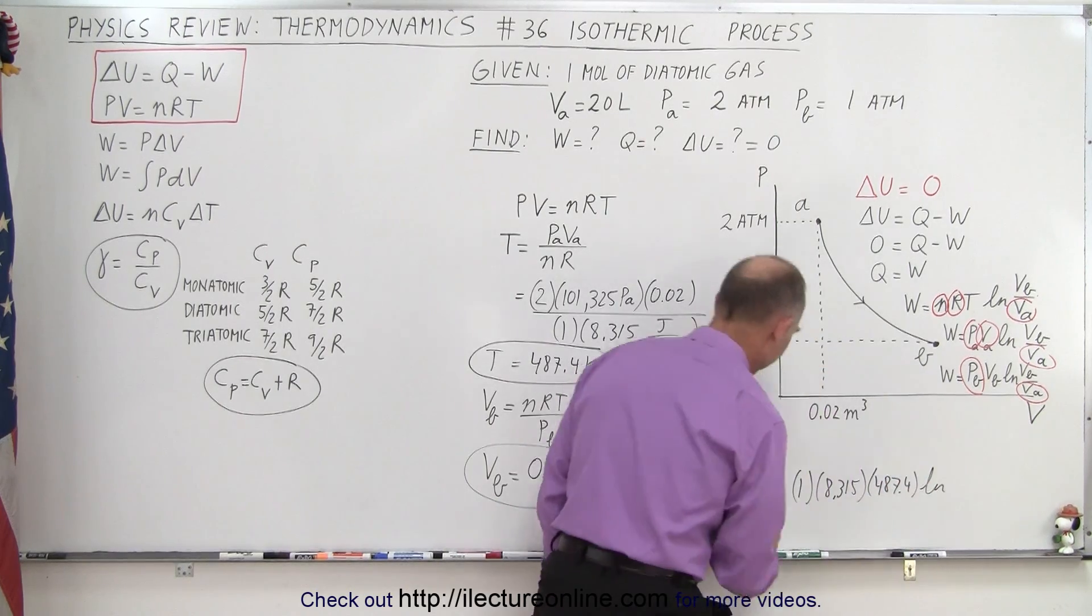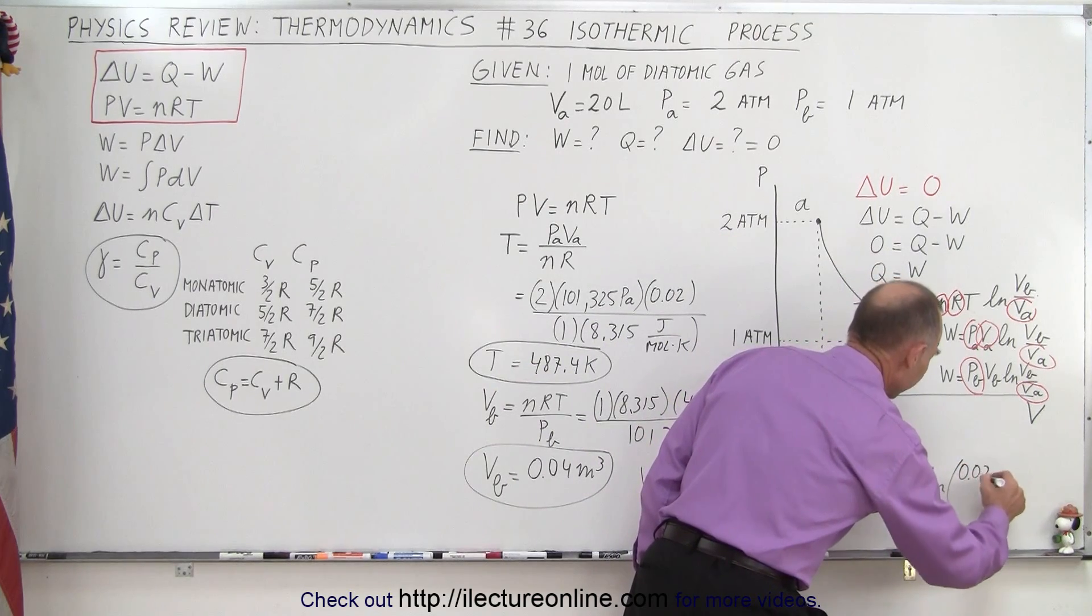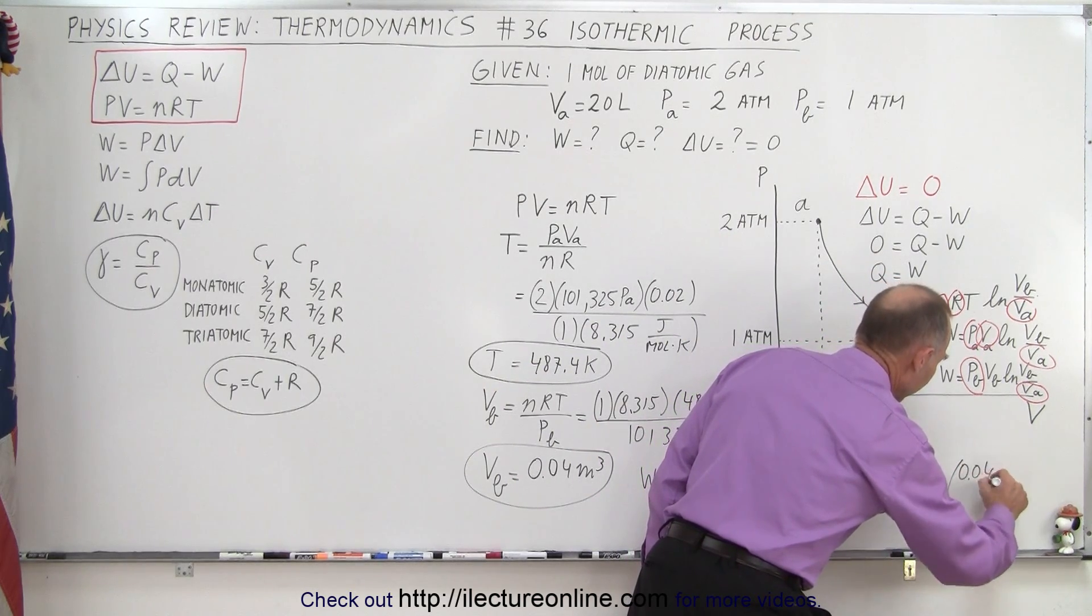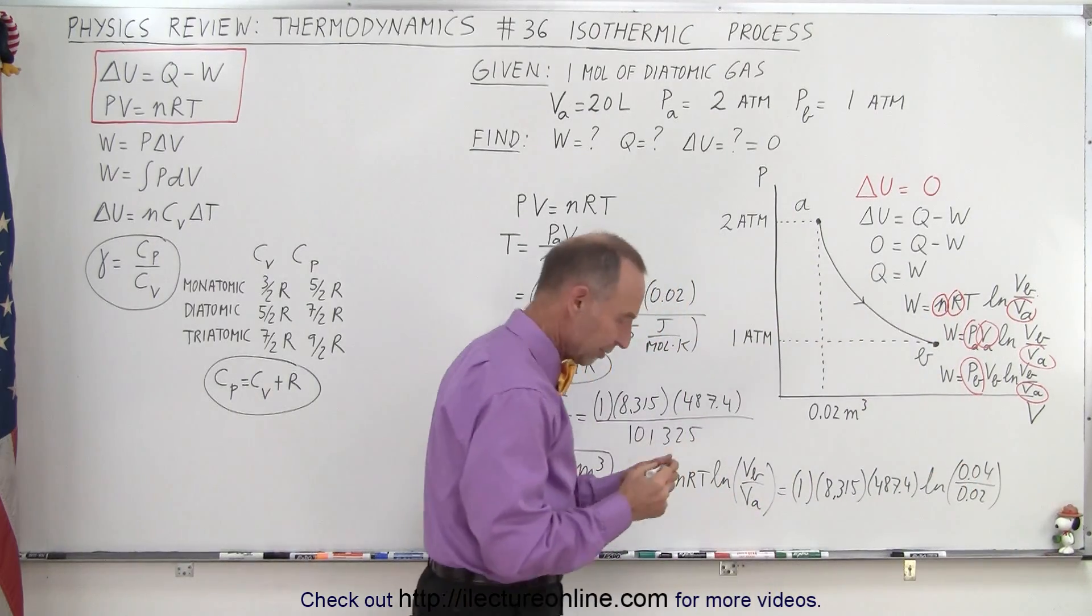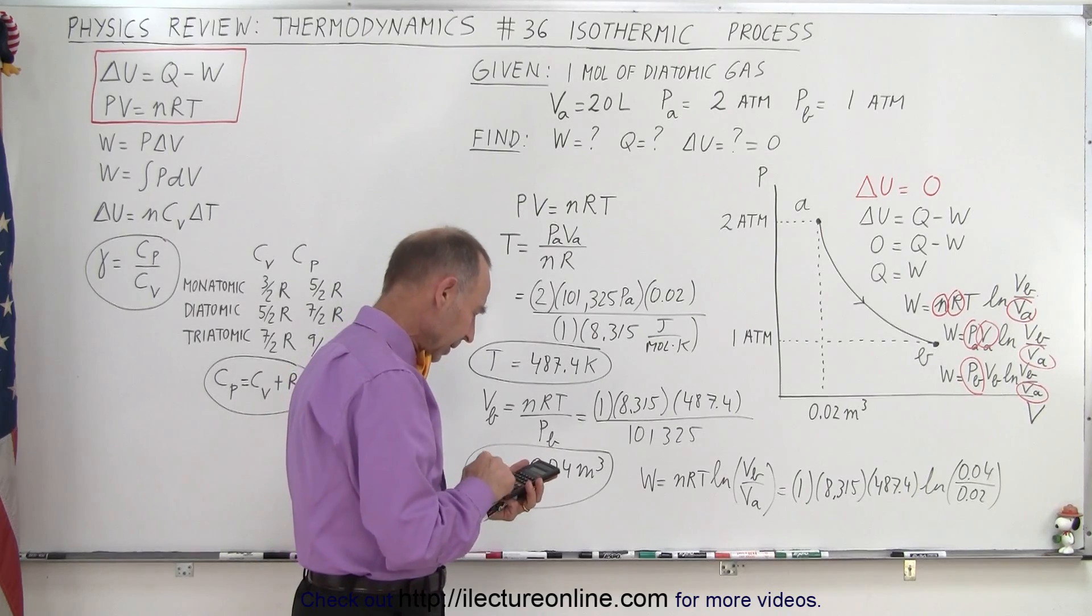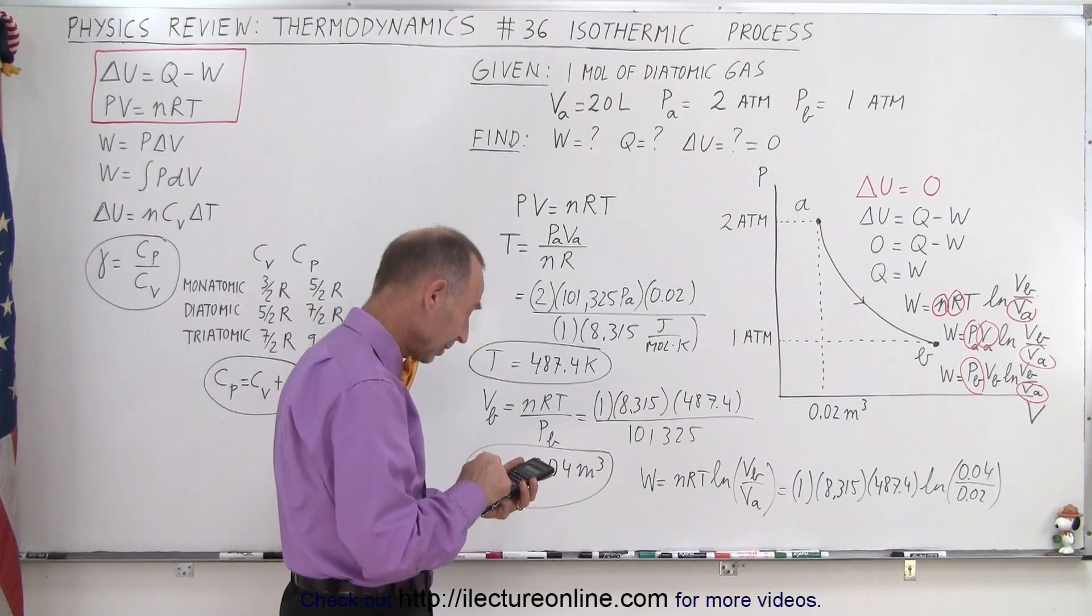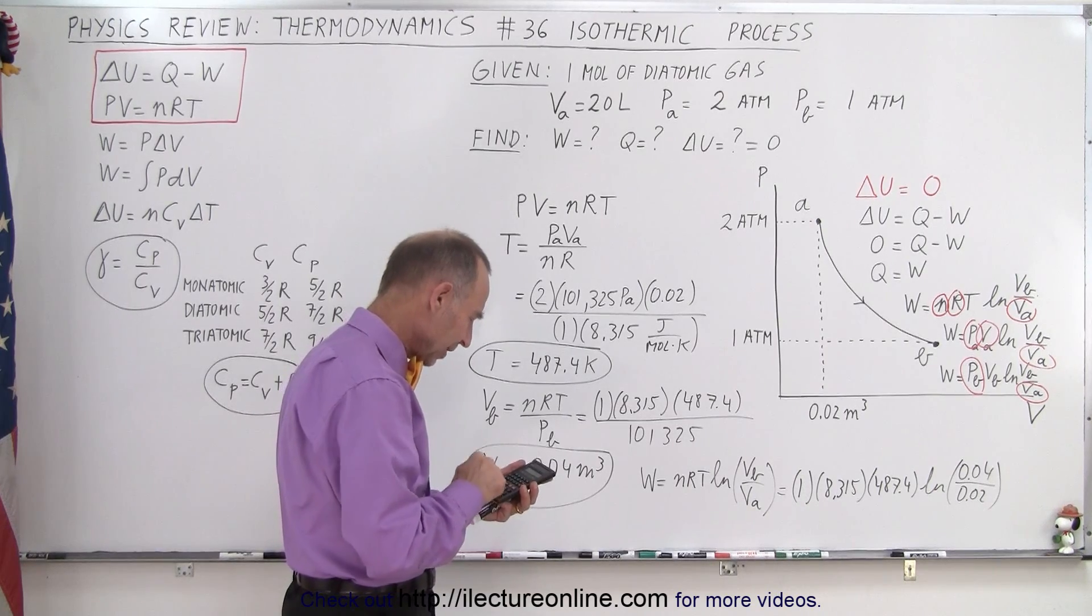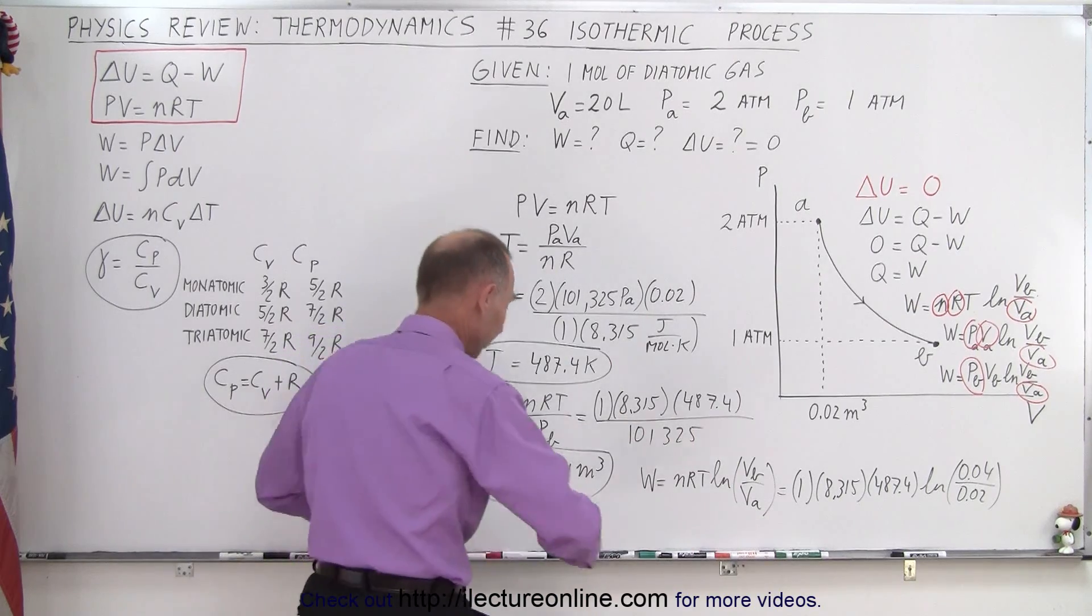And that's the natural log then of VB over VA, which is essentially a ratio of 2. This is 0.04 divided by 0.02, so that's essentially the natural log of 2. So we take 2, take the natural log times 487.4 times 8.315, and it tells us that it's 2,809 joules.